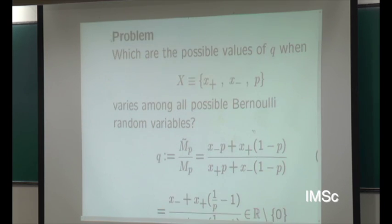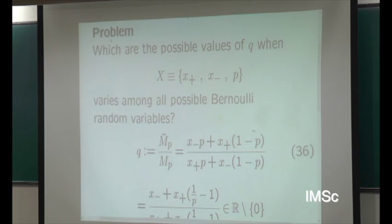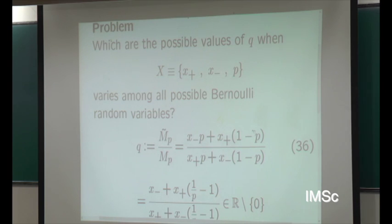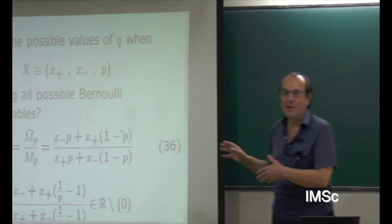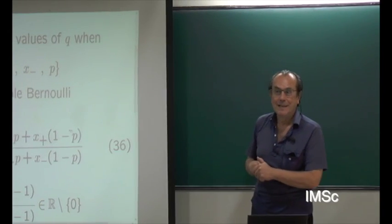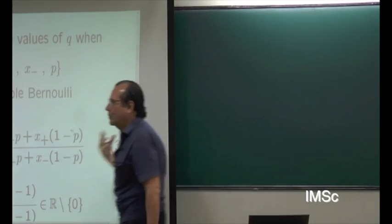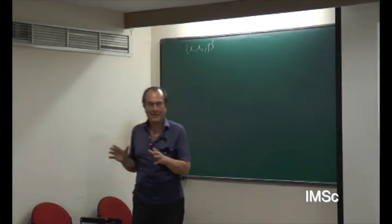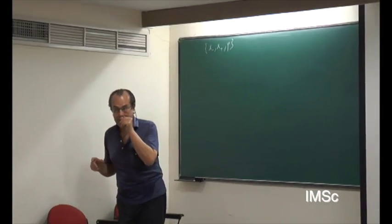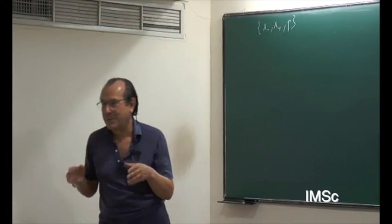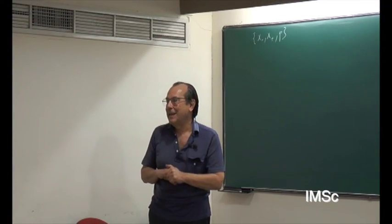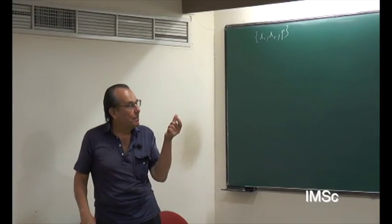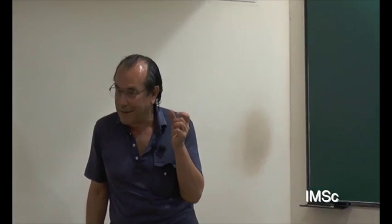Now we want to discuss: what is the allowed range of Q? This problem has a story in quantum probability. The Q deformation was introduced in physics without very detailed mathematical analysis. The first detailed mathematical analysis was done by Bożejko and Speicher, who proved positivity for Q between minus one and one, but real.